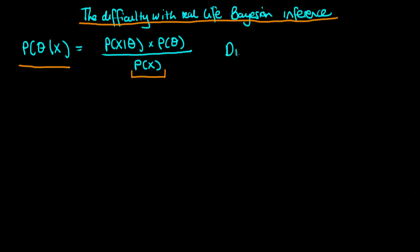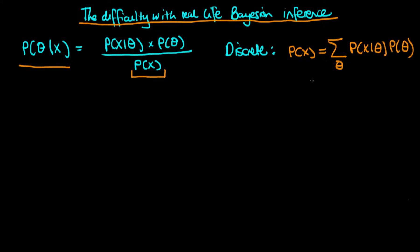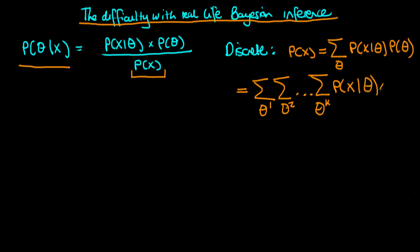If the parameter vector was discrete, then we would calculate P(X) by doing a sum — we would sum over theta of the numerator, P(X|theta) times P(theta). But remember that theta is typically a vector, so what this really means is that we're doing a multidimensional sum: summing over theta_1, theta_2, etc., up to theta_k, of P(X|theta) times P(theta), where theta is the vector of theta_1 through theta_k.